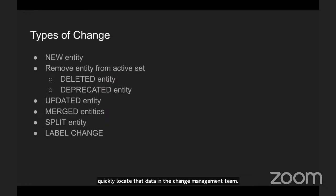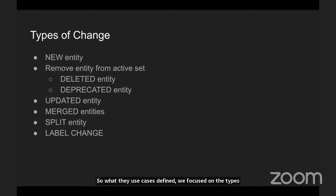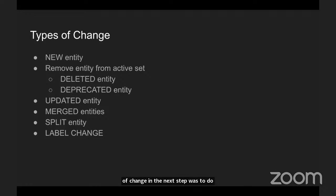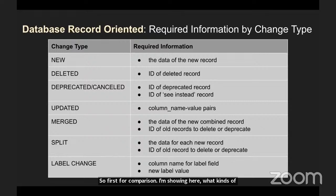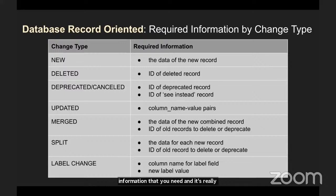With the use cases defined, we focused on the types of change that can occur and identified seven types of change. The next step was to identify what kind of information we need for each type of change. For comparison, I'm showing what kinds of information you would use if working with just a database record. The key takeaway is that it's a fairly limited amount of information and a straightforward process.